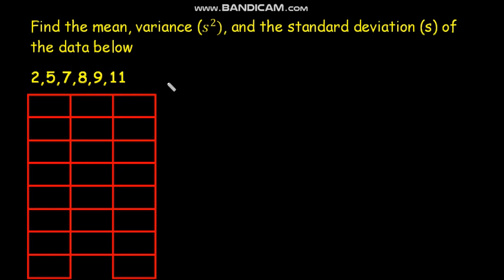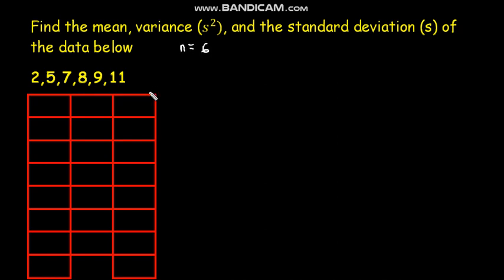Let us start with this problem: find the sample mean, variance, and standard deviation of the data below. The data was extracted from a certain population, for example from 0 up to 100, and they picked only six samples. Therefore n is equal to six.